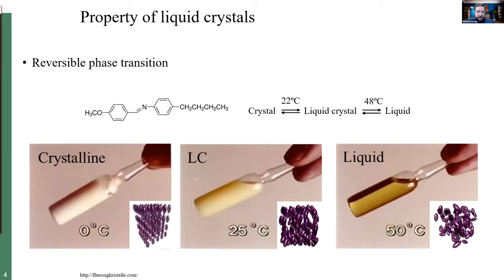Another property of liquid crystals is that they have a reversible phase transition — oftentimes from a liquid to an amorphous liquid phase, to the liquid crystalline phase. Here we have an example of a liquid crystalline material that transitions from a solid crystal at 22 degrees to a liquid crystal, and then from a liquid crystal to a liquid as temperature increases. As it goes beyond the liquid crystal-to-liquid transition, it goes from an opaque material to a transparent material as it becomes completely amorphous and no longer scatters light.